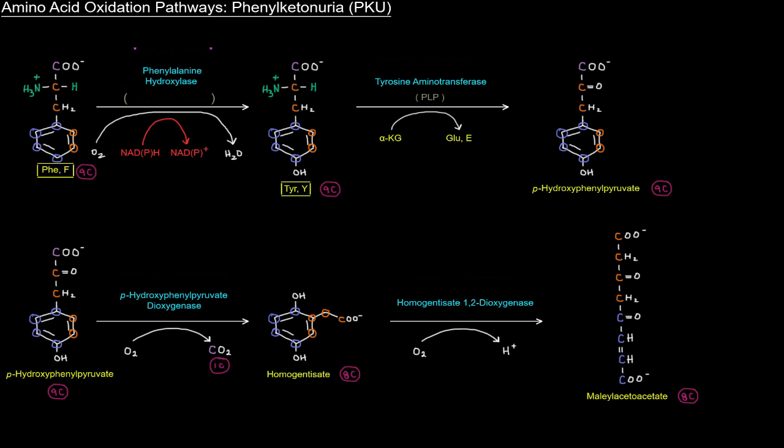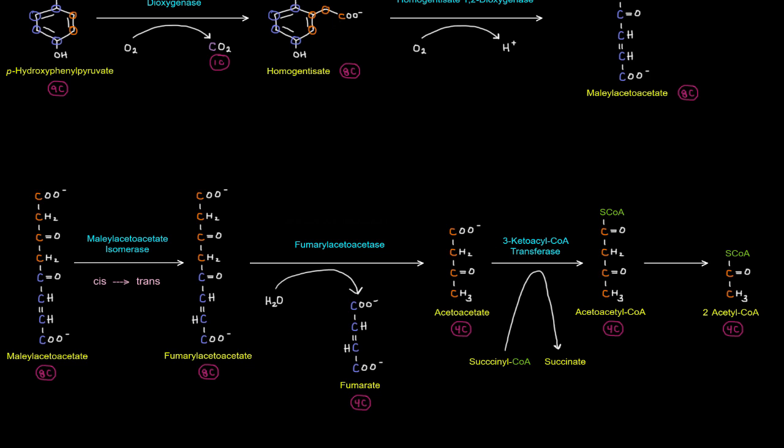Then this homogentisate, this 8-carbon molecule, gives rise to maleylacetoacetate with homogentisate 1,2-dioxygenase. The ring is broken up and gives us this molecule here to the right, maleylacetoacetate, where these four carbons are basically going to be the acetoacetate portion. And then this portion will eventually come off as a fumarate. We'll see that it's actually converted into fumarylacetoacetate, which turns this double bond from a cis double bond to a trans double bond, so that this portion of the molecule with the blue carbons can actually come off as a fumarate.